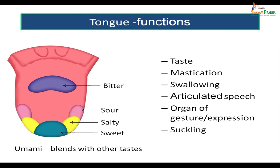The functions of the tongue — notably taste. The taste sensation is something all of us are familiar with. We have four basic senses of taste. At the tip of the tongue we feel sweetness. On the sides, we feel salty and sourness. At the back of the tongue, we feel bitterness. In addition, there is the taste of umami, which is a savory sensation associated with monosodium glutamate — Ajinomoto.